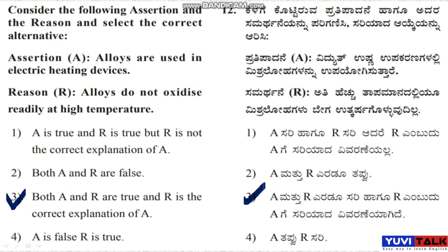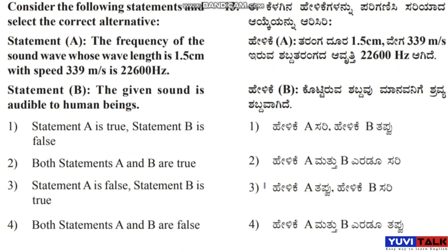Now let's move on to the next question. Consider the following statements and select the correct alternative. Statement A: The frequency of a sound wave whose wavelength is 1.5 centimeters with speed 339 meters per second is 22,600 hertz. Statement B: The given sound is audible to human beings. Option 1: Statement A is true, Statement B is false. Option 2: Both statements A and B are true. Option 3: Statement A is false, Statement B is true. Option 4: Both statements A and B are false.